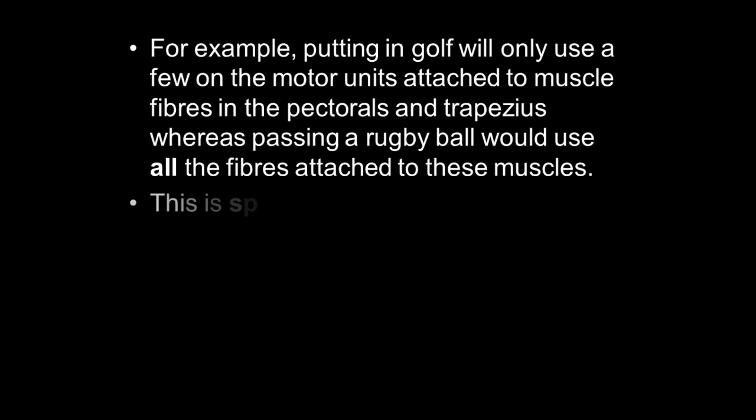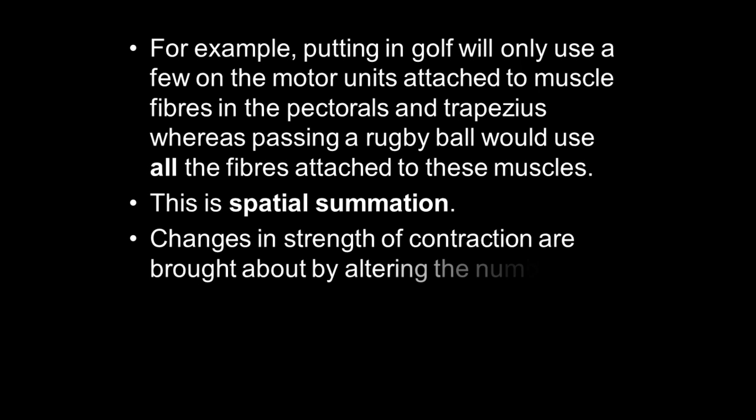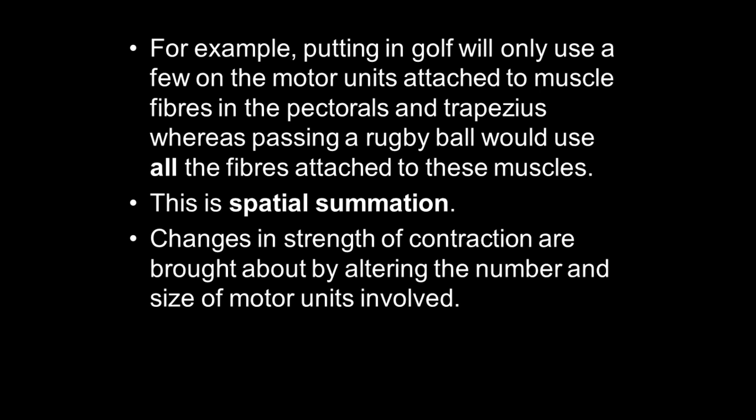A good way of thinking about this is putting in golf. You'd only use motor units attached to the pectorals and trapezius, and you don't want a large contraction, so you'd only utilize a few motor units — probably type 1 motor units. Whereas in boxing and punching, you're going to recruit a large number of motor units and select some of the largest ones — the type 2b motor units. This way you can control the size of the contraction. The force generated through punching is much greater than simply lifting your arm, and that's brought about by spatial summation.